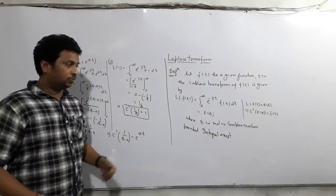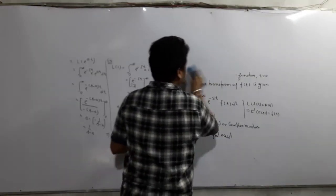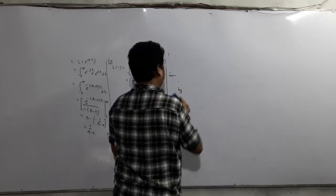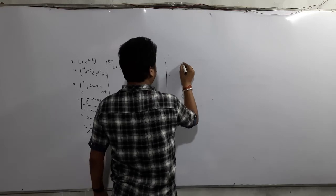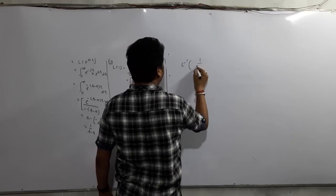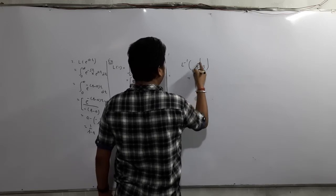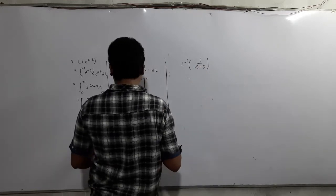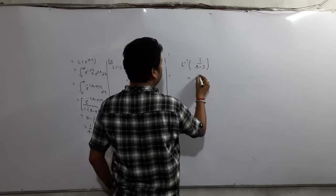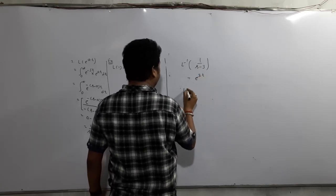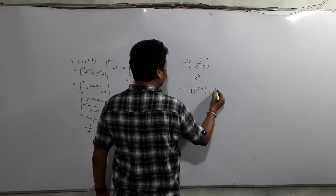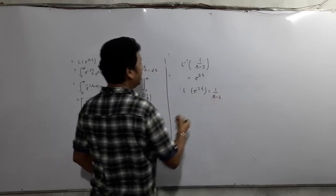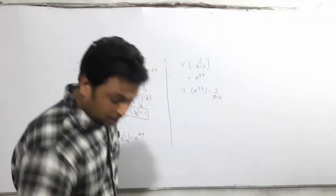Hope you understand these two results. Now suppose they ask what is L inverse of 1/(S − 3). This is of the S minus a type, so what is the value of a? It is 3, and the answer is e to the power 3t. Similarly, what is L inverse of 1/(S − 2)? The answer is e to the power 2t. So we can do these easily.